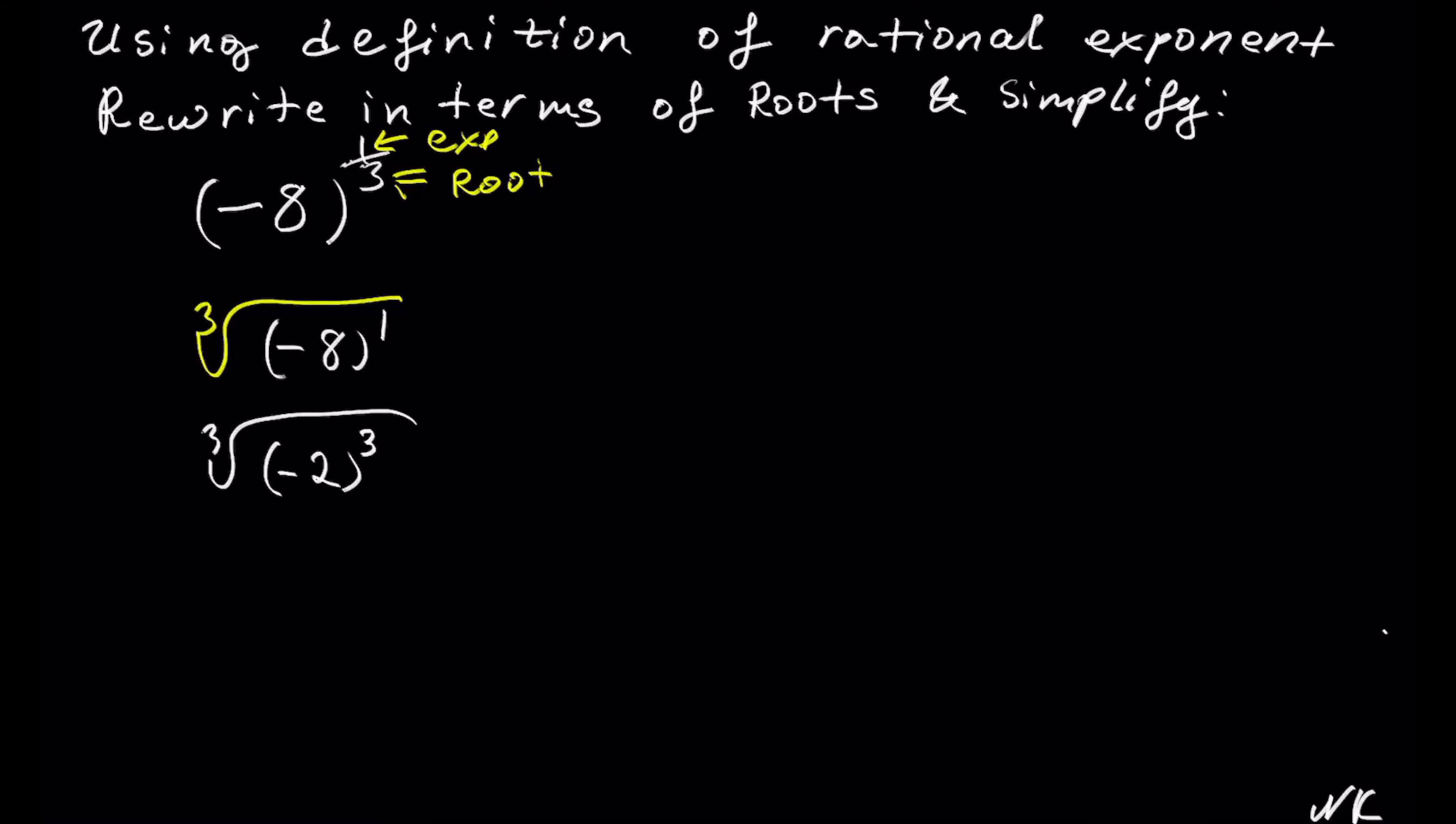So now that we have a cube root of negative 2 to the third power, cube root and a third power will cancel out, and we get negative 2 as our solution.